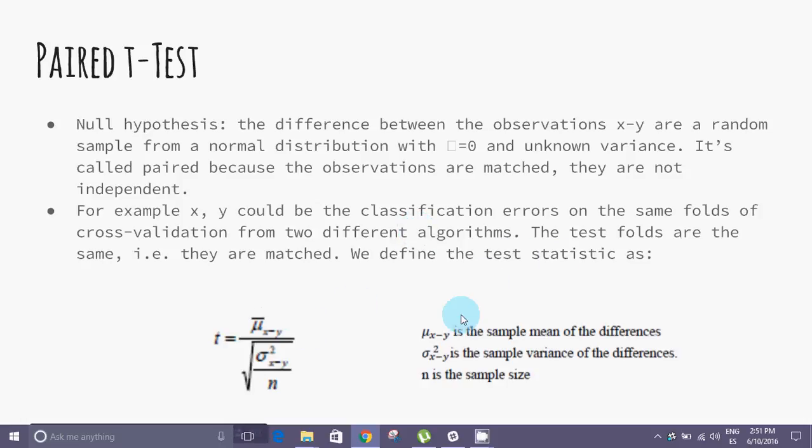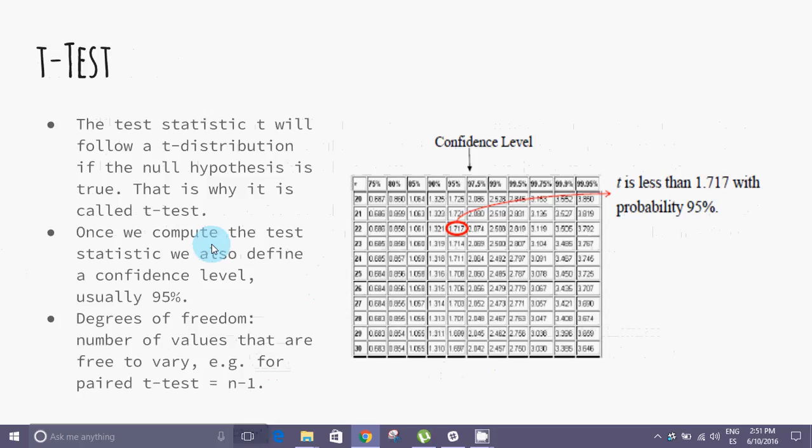We can see the test statistic. If the calculated statistic value t is above the threshold chosen for statistical significance, then the null hypothesis that the two groups do not differ is rejected in favor of the alternative hypothesis, which typically states that the groups do differ.